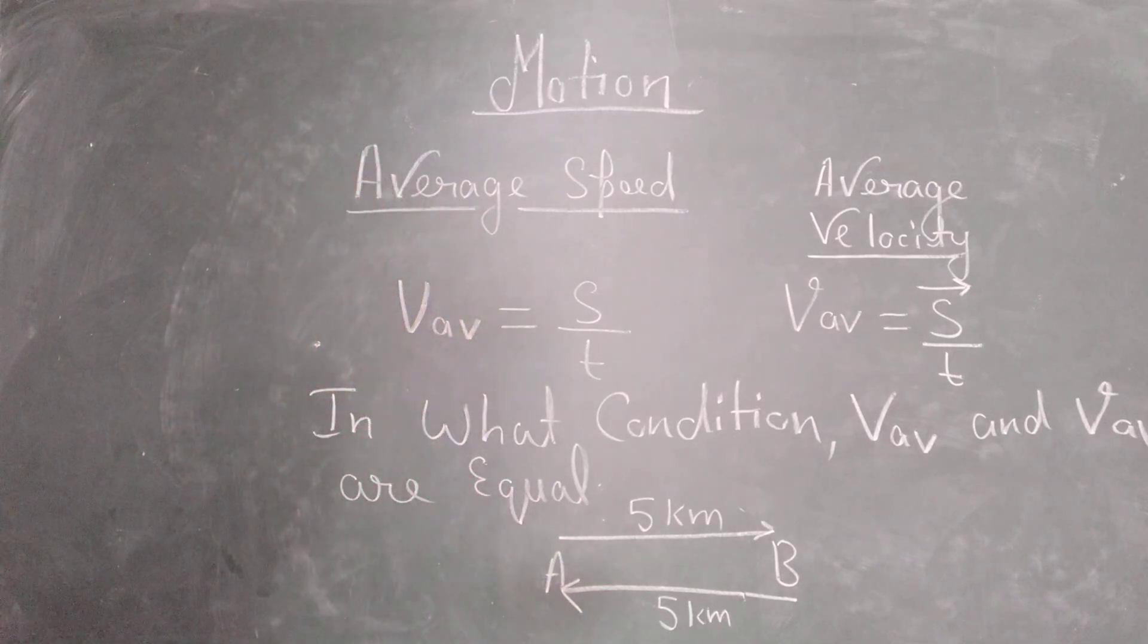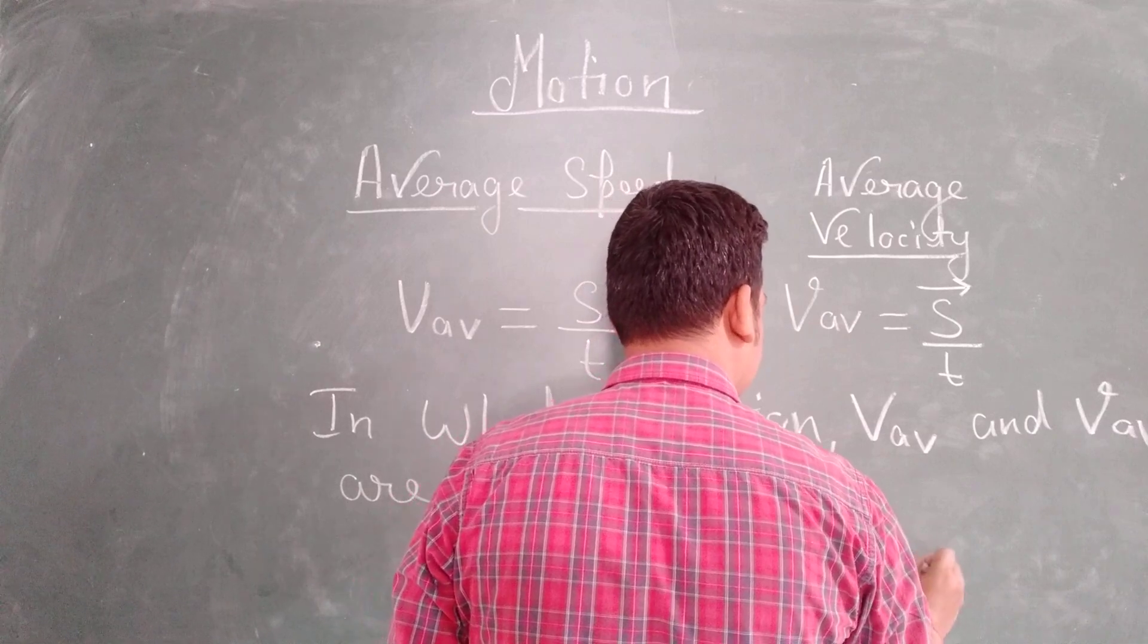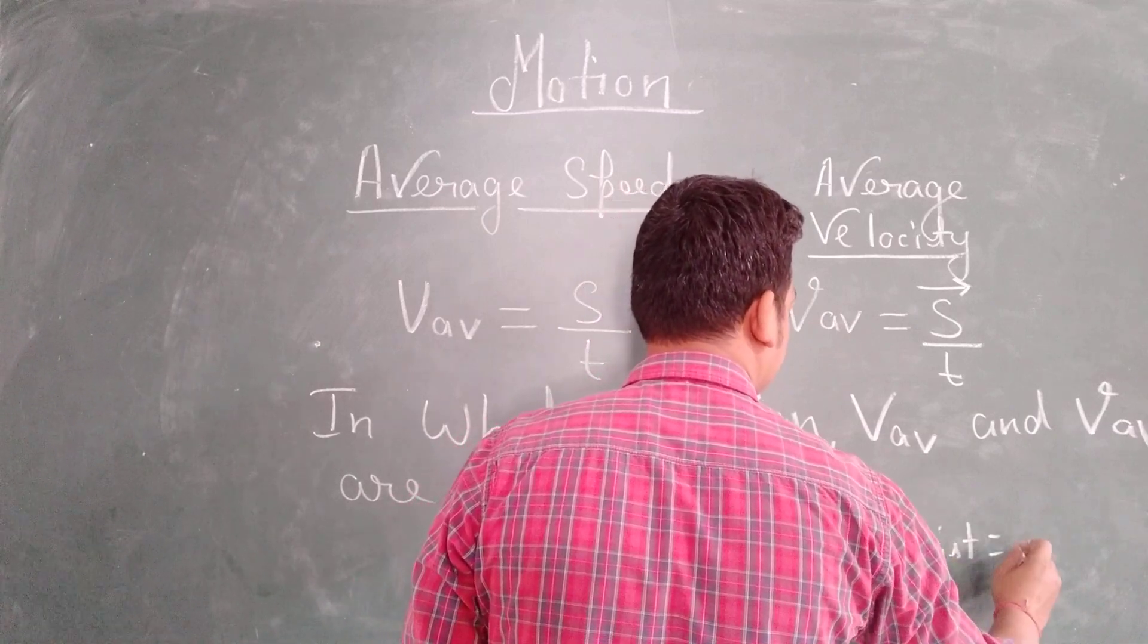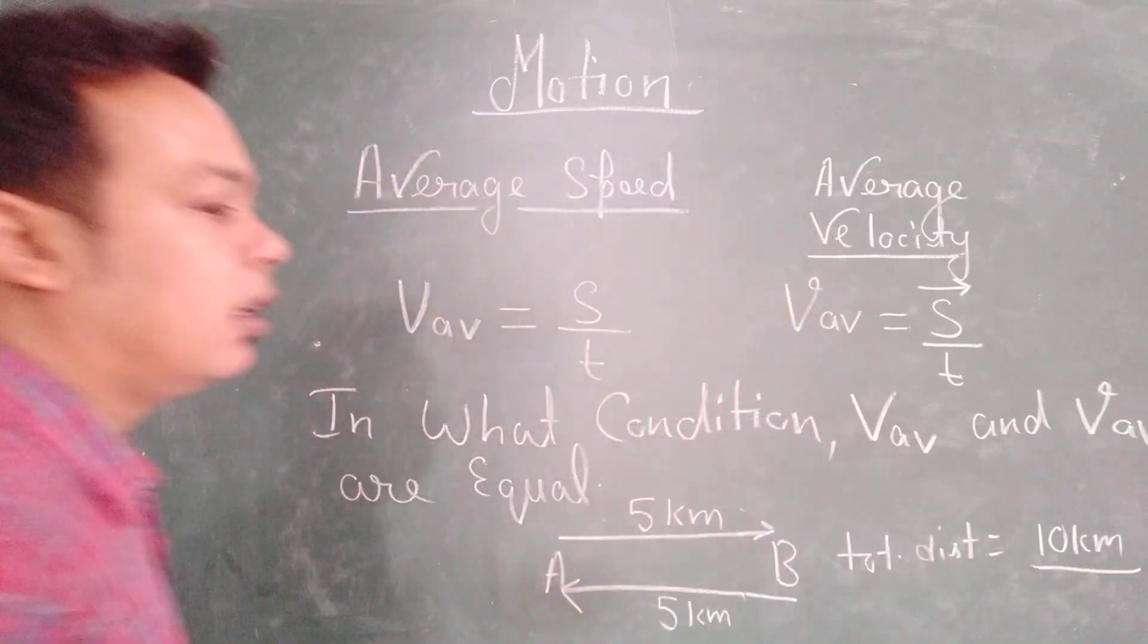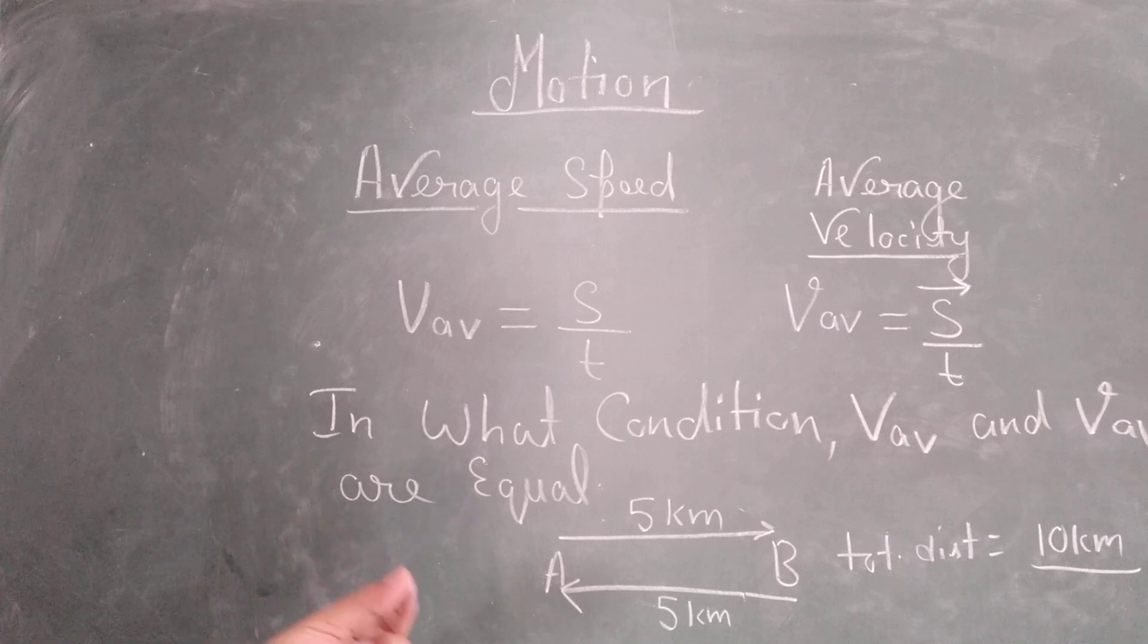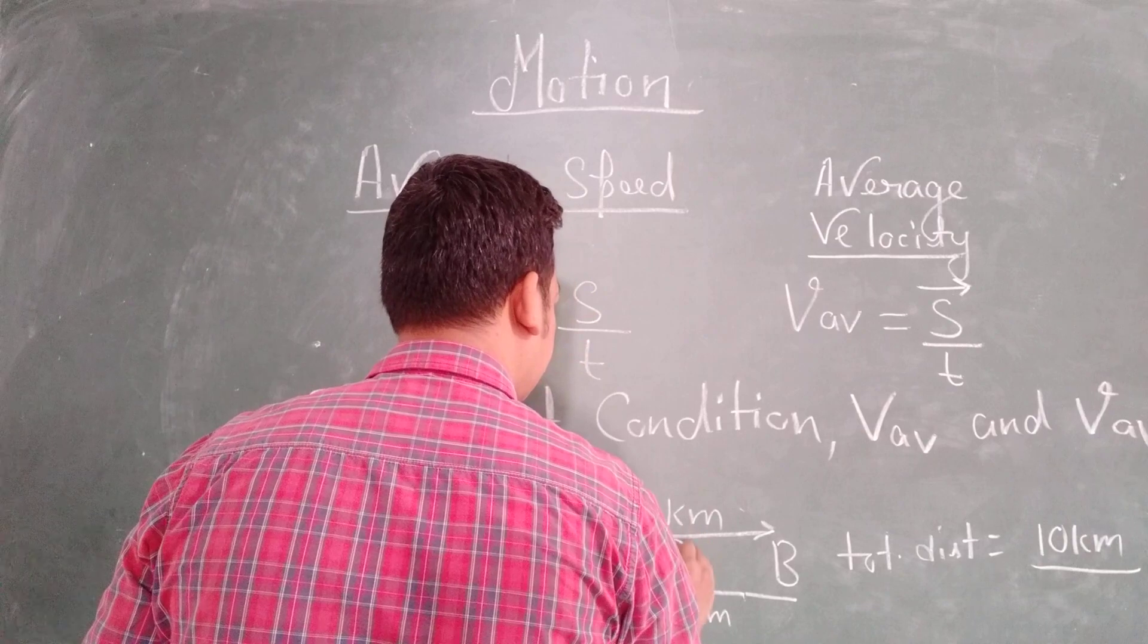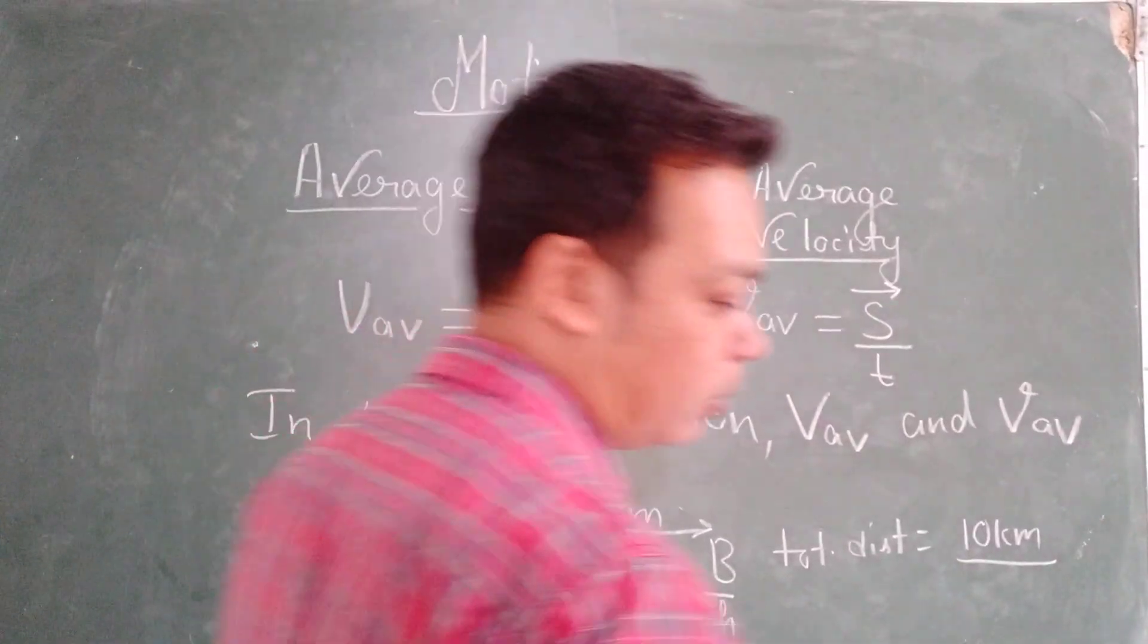If we talk about the distance, the total distance here will become 5 plus 5 and that is equal to 10 km. Now if we assume that from A to B the time taken was 1 hour and the same time was taken from B to A, then total time will be 1 hour plus 1 hour, that is equal to 2 hours.